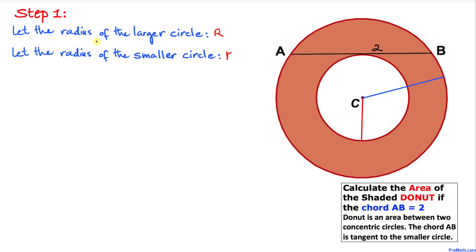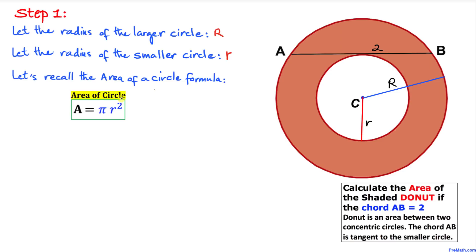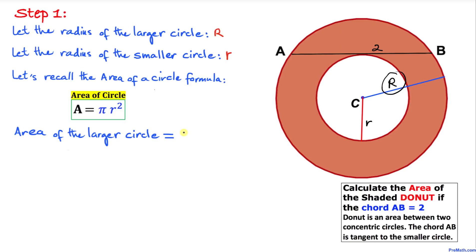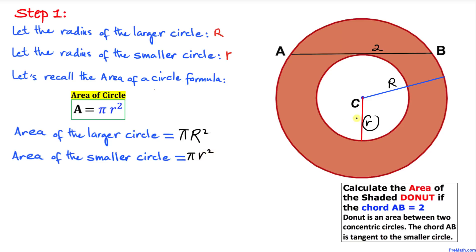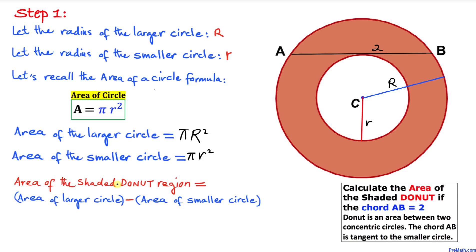Let the radius of the larger circle be uppercase R and the radius of the smaller circle be lowercase r. Recalling the area of a circle formula — area equals π r² — the area of the larger circle is π R² and the area of the smaller circle is π r².